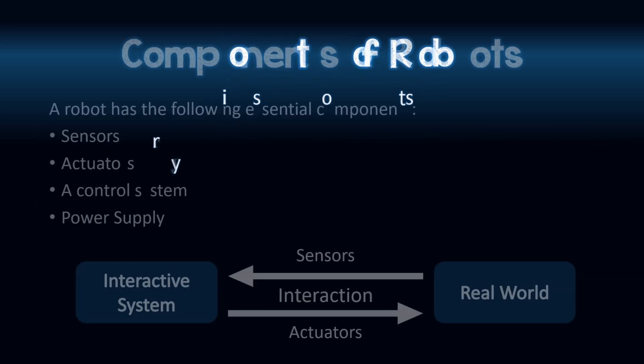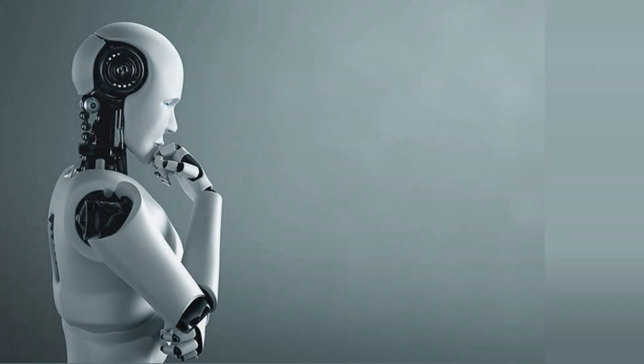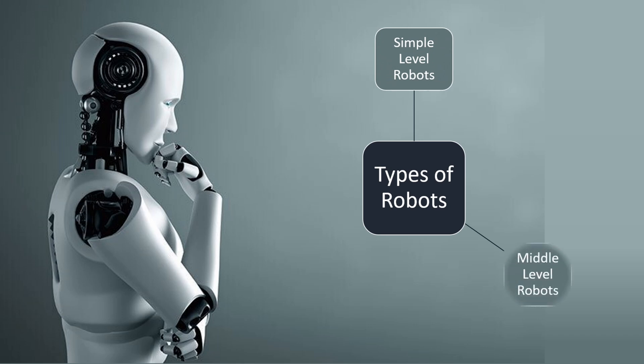Sensors, actuators, a control system, and power supply are the essential components that a robot has. The types of robots are simple level robots, middle level robots, and complex level robots.